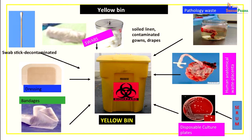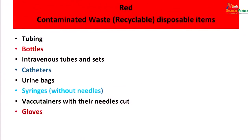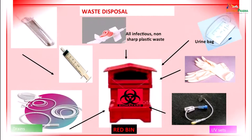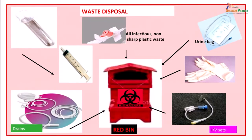You can see it pictorially also — it contains all the lab waste, patient dressings which have been contaminated, culture plates from the labs, tissues, or pathological waste. As far as the red bag is concerned, it is used to collect contaminated recyclable disposable items which could be glass tubings, rubber tubings, bottles, IV tubes and sets, catheters, urine bags, syringes, vacutainers, and gloves — all collected in the red bin. These are all items which are reusable after processing, including syringes, glass tubings, and gloves.